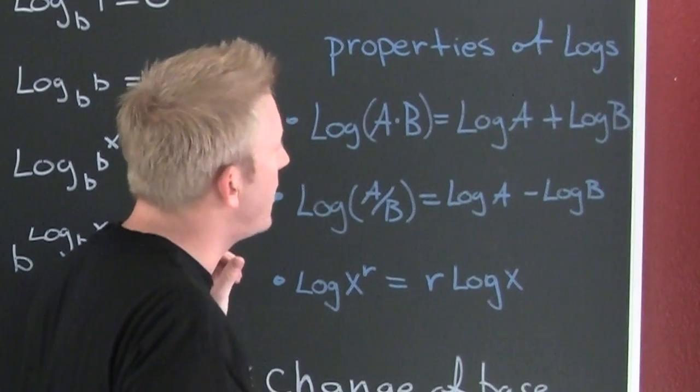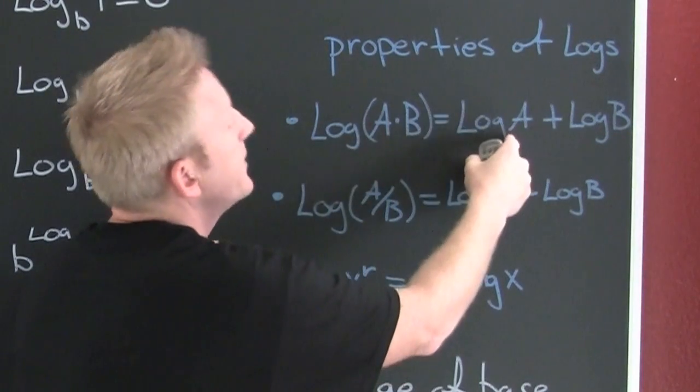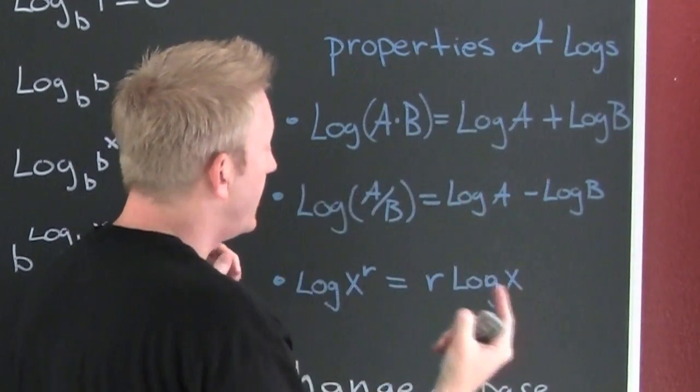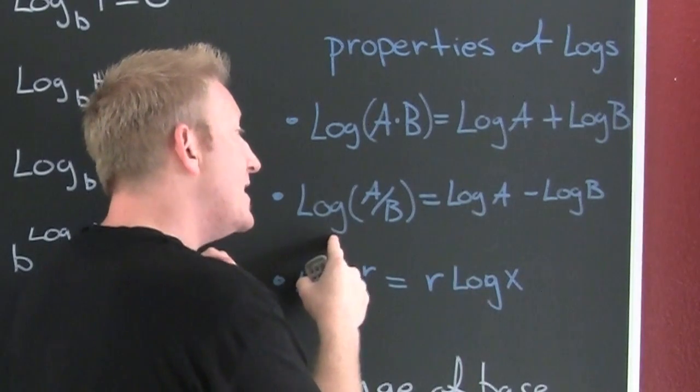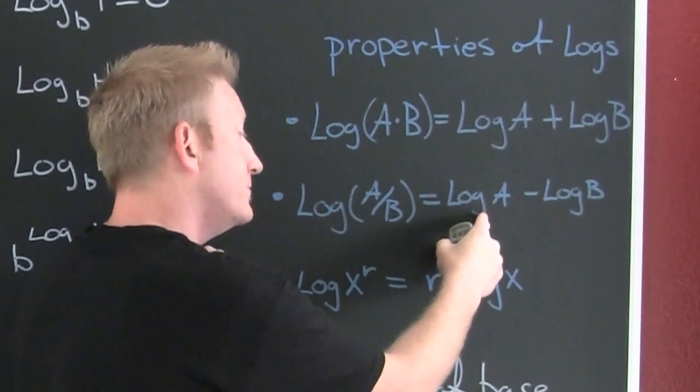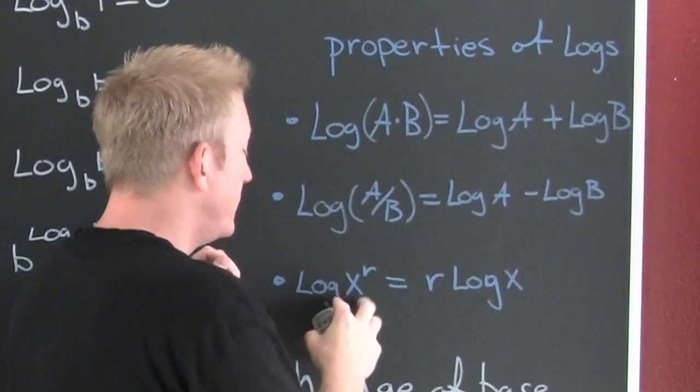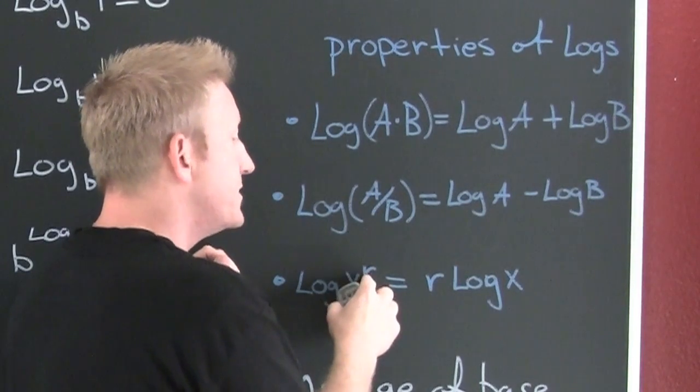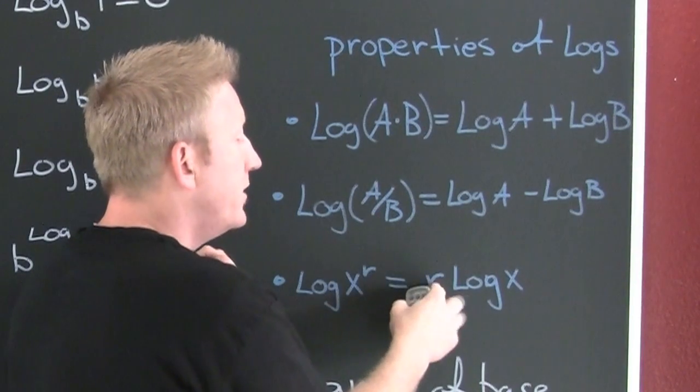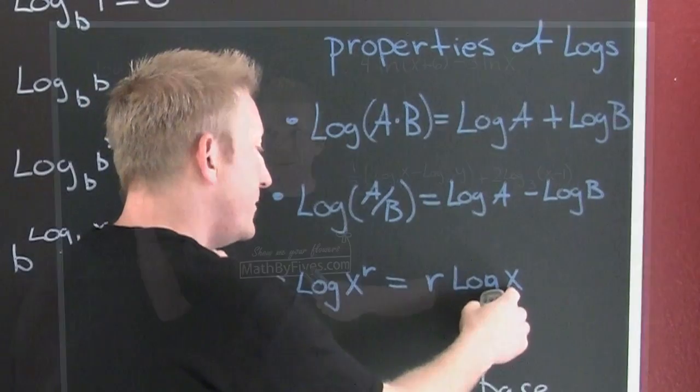Some properties of logarithms. The log of a product is the sum of the logs. The log of a quotient is the difference of the logs. And log of the argument to the r power is r times the log of the argument.